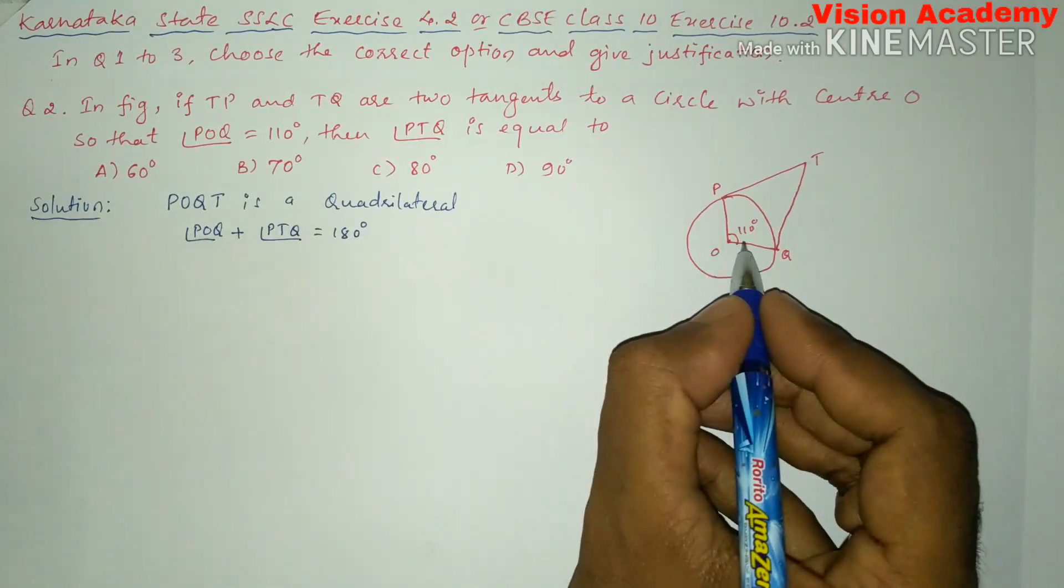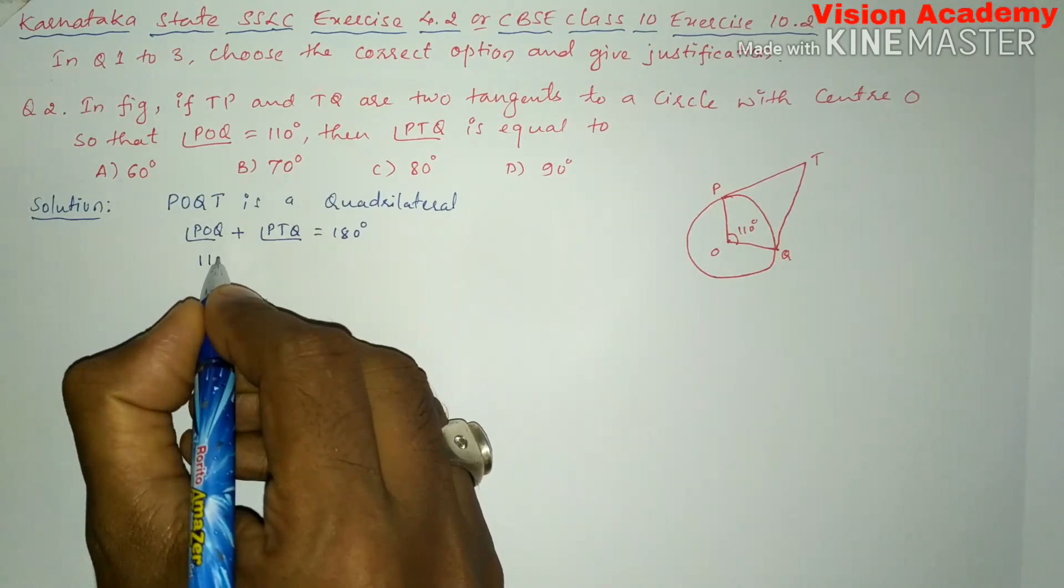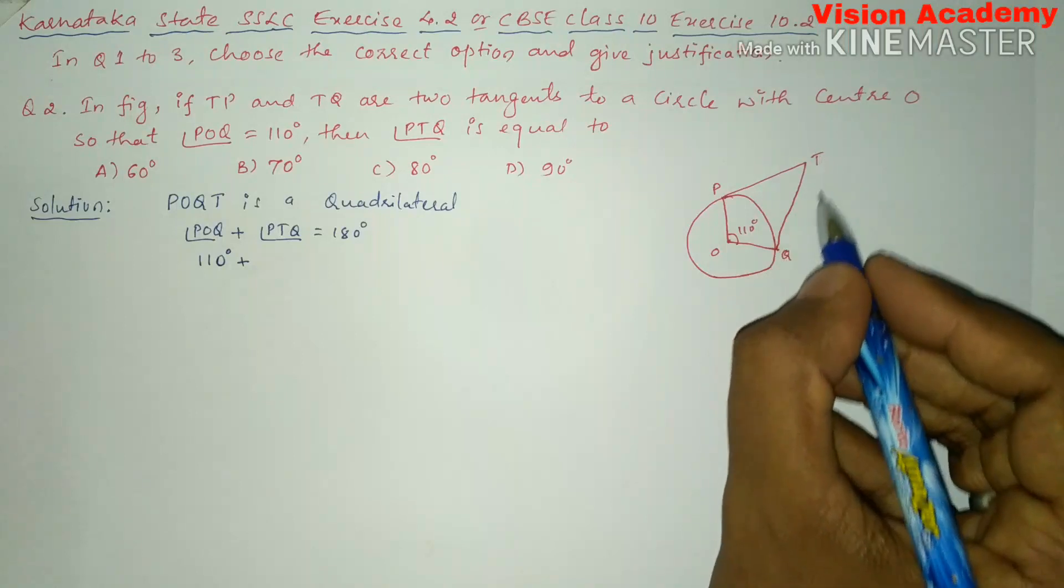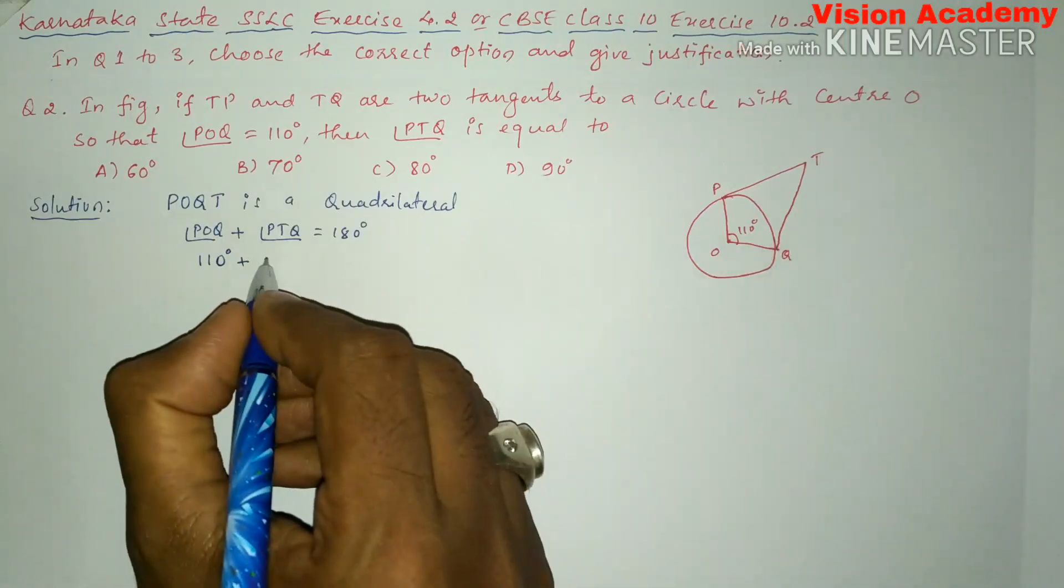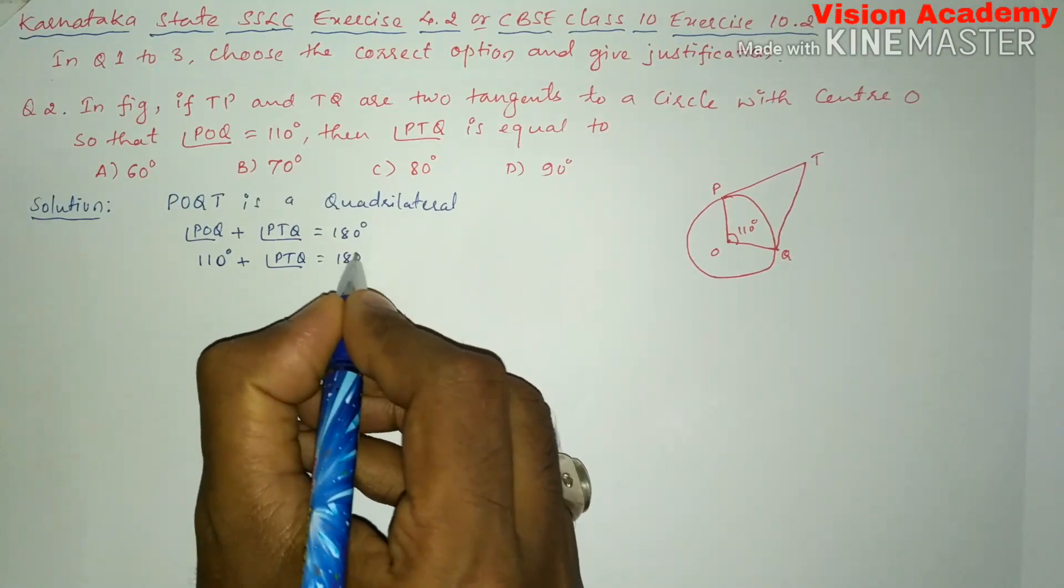Here angle POQ is already given, that is 110 degrees, and we need to find PTQ. So angle PTQ is equal to 180 degrees.